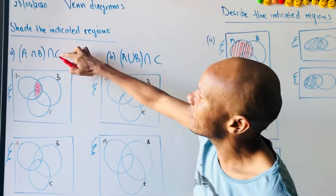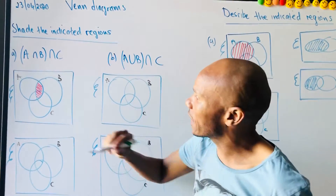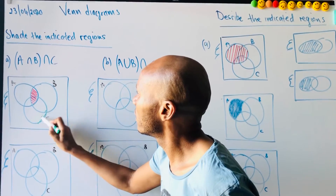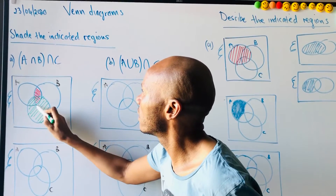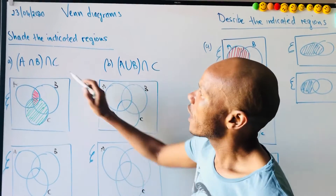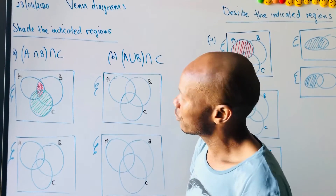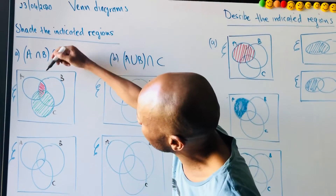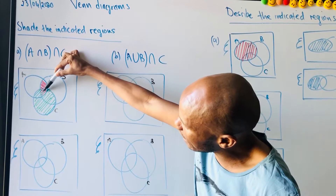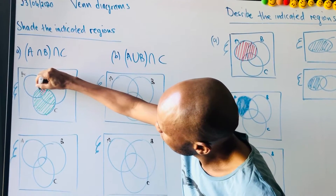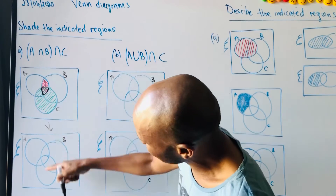Now before I look at the sign, I shade C using a different color. Now I'm looking at where I'm going to find two lines — both colors overlapping. Red only, green only, green only — but there I have two lines.